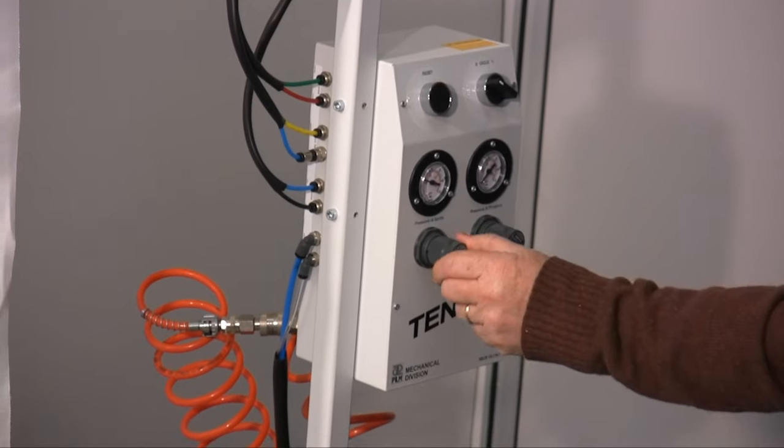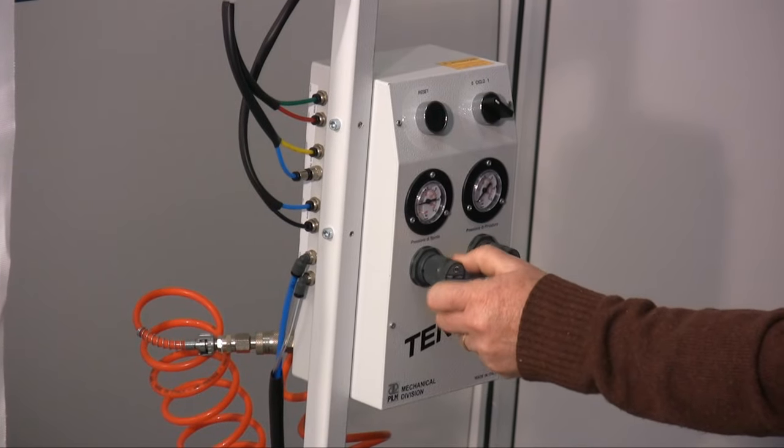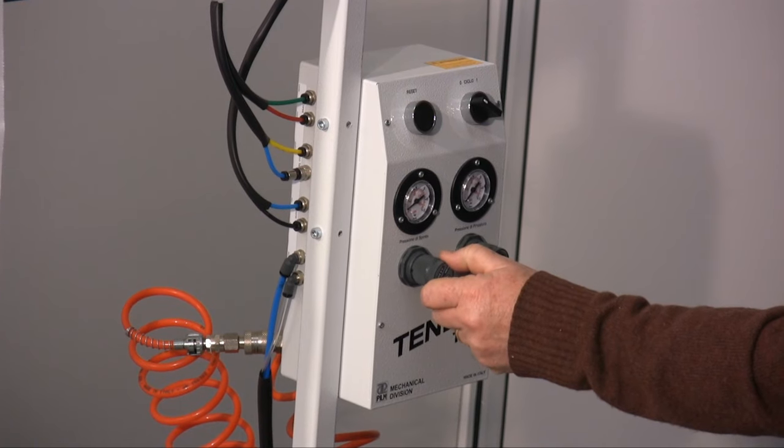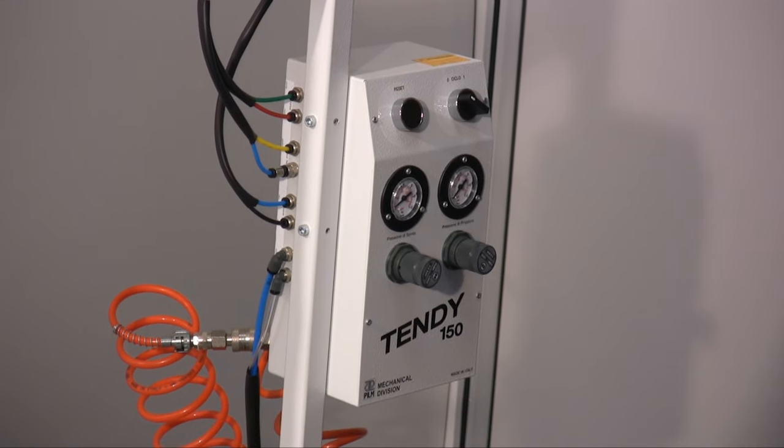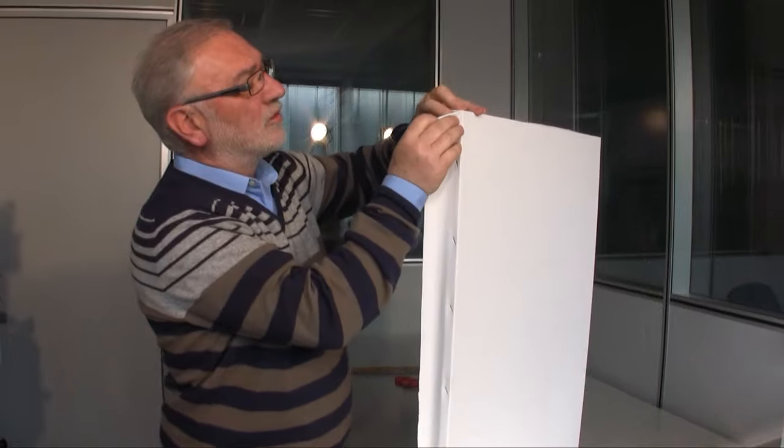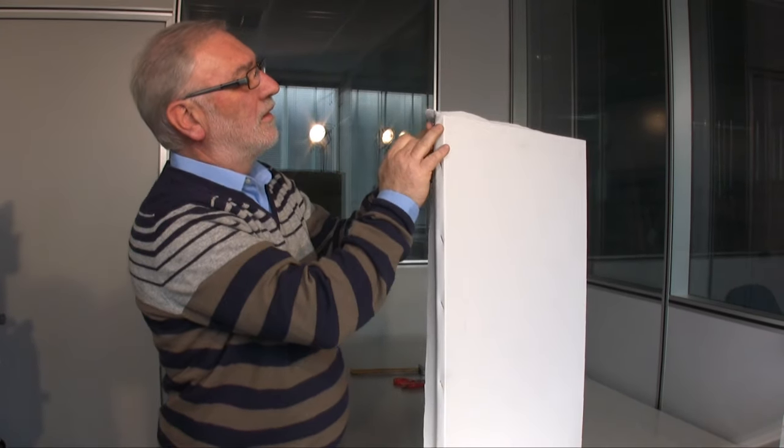It's necessary to lower the pressure to a singular atmosphere by rotating the appropriate knob, which is found under the title Pushing Pressure. At the end, the corners are manually fixed with a couple of staples.